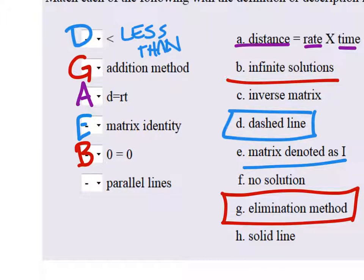And parallel lines have the same slope, which isn't an option here. So, it looks like it's no solution. There are no solutions to two lines that never intersect. You guys remember that?